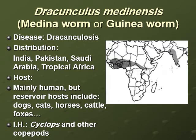Now we come to Dracunculus medinensis, also called the Medina worm or Guinea worm. It is used as the serpent present in the medical slogan. The disease is called draconculosis. Its distribution includes India, Pakistan, Saudi Arabia, Yemen, and tropical Africa. The host is mainly human, but reservoir hosts include dogs, cats, horses, cattle, foxes, and any animals that drink infected water.